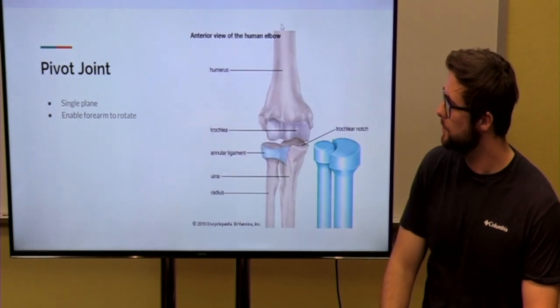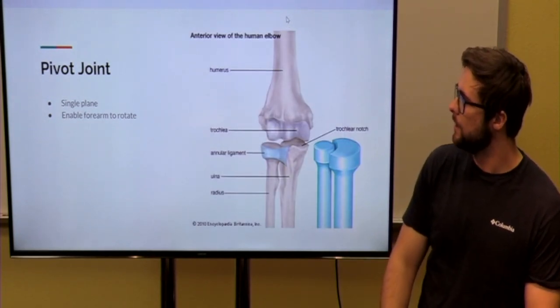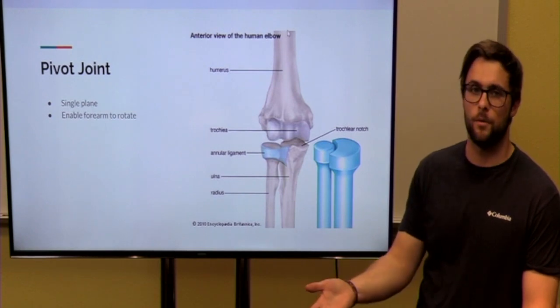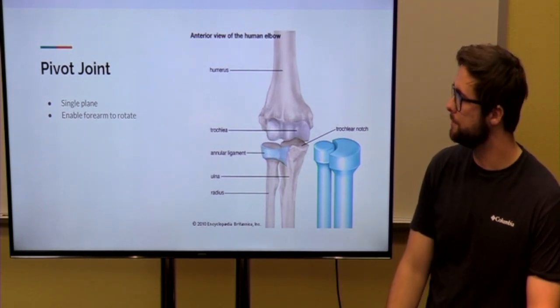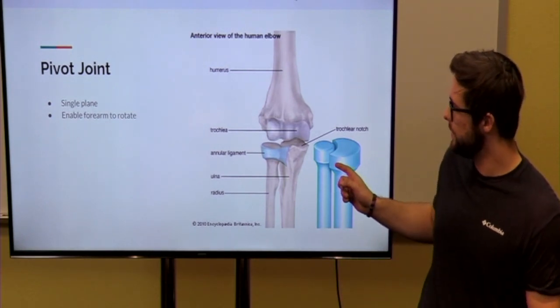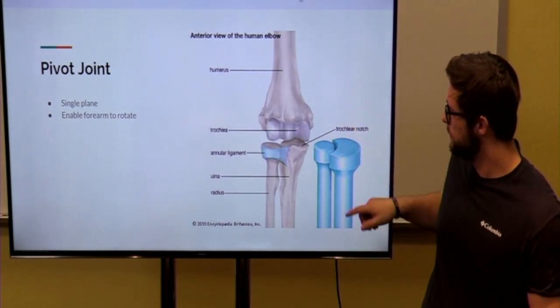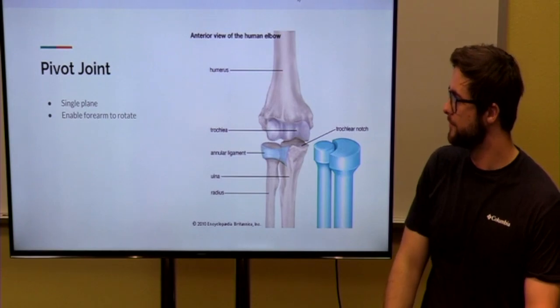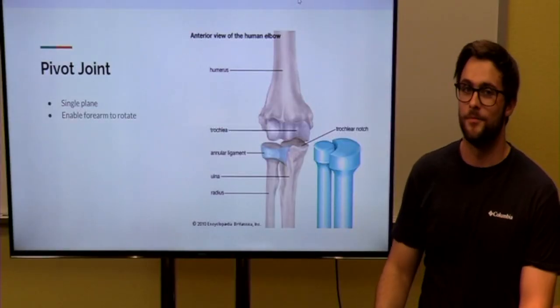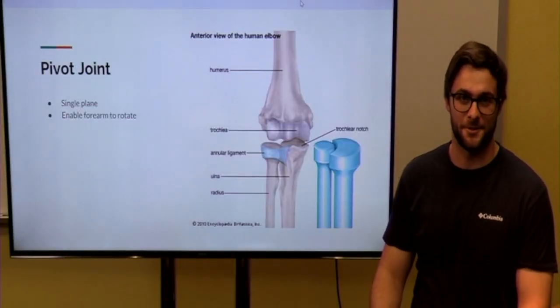And then the last joint we have is the pivot joint. This has a single plane. It allows you to rotate your forearm and also your foot. So you can just kind of see here where it's a little cylinder inside of the cutout of the other cylinder. And that is the muscular and skeletal system.